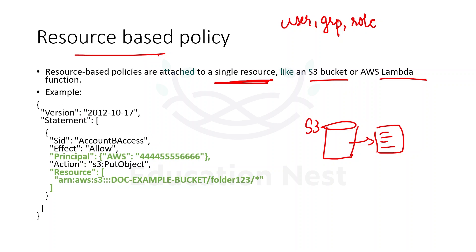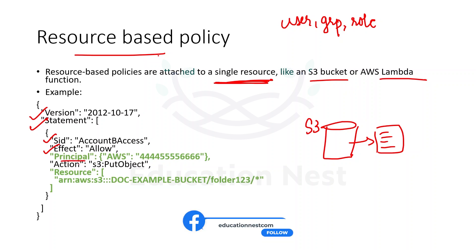In this example, version and statement are present. Apart from that, you will see a statement ID. If you have multiple statements, the statement ID describes what that statement is allowing you to do. The effect here is Allow. A new element being added is Principal. Because resource-based policies are attached to a resource, we have to specify which principal — which user, group, or role — is allowed to access it.